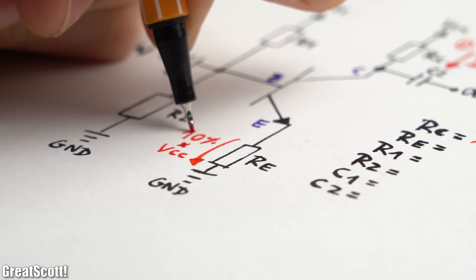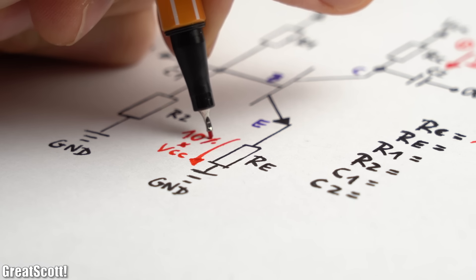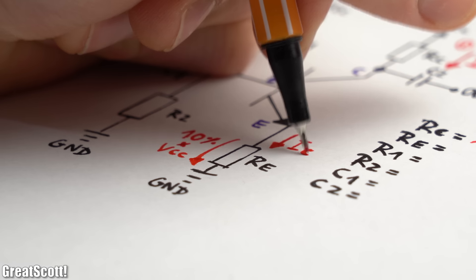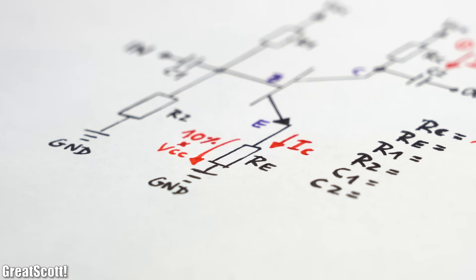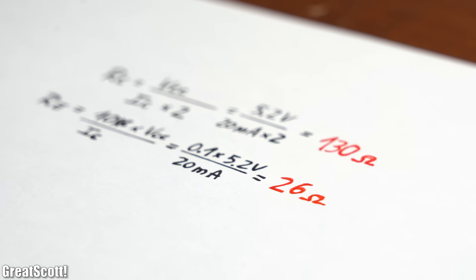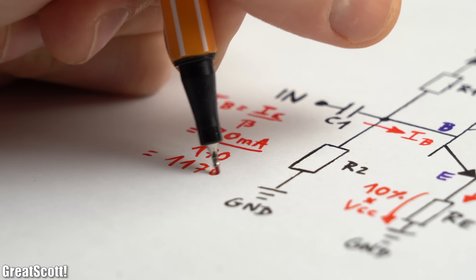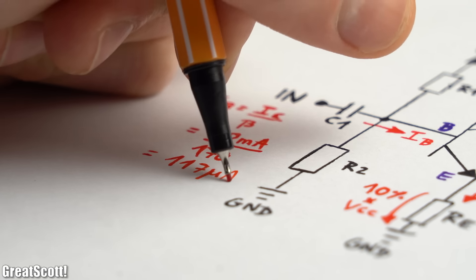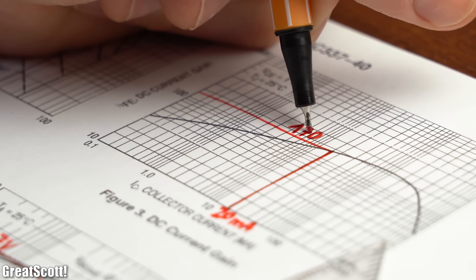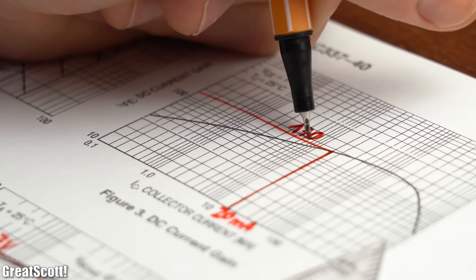Next, the emitter resistor usually drops around 10% of the supply voltage, and since we know that the collector current is flowing through it, we get a resistor value of 26 Ohms. Now we can calculate the base current by simply dividing the collector current through the gain factor, which is around 170 at 20mA.